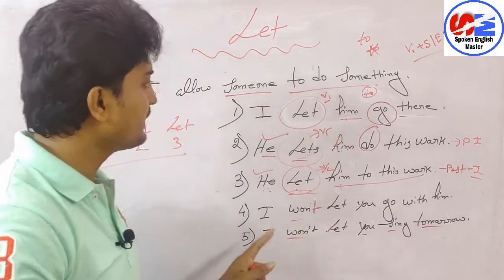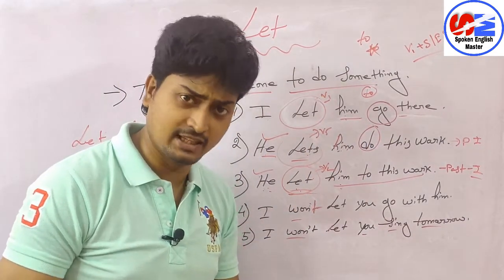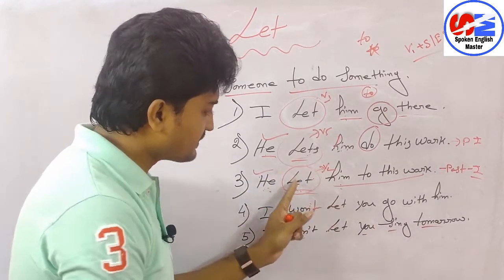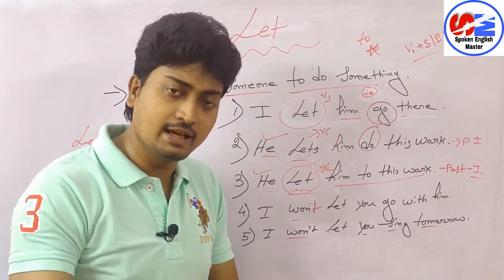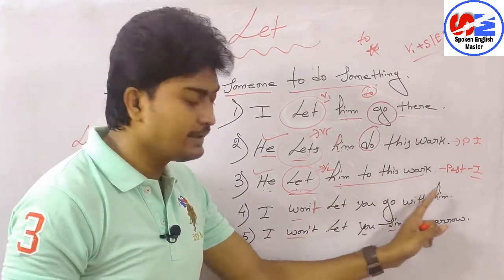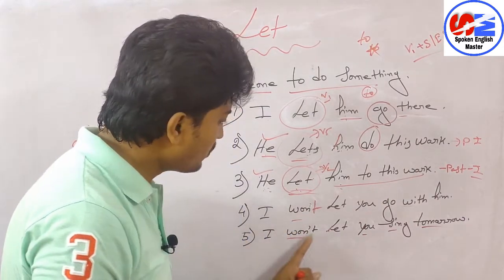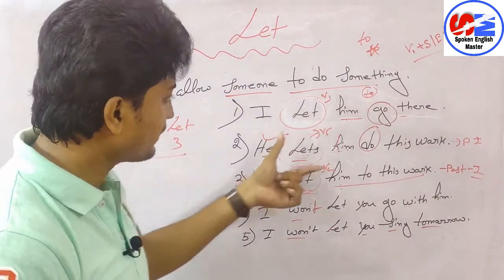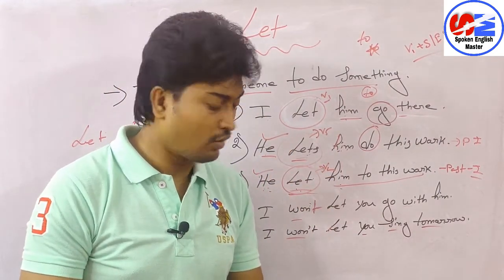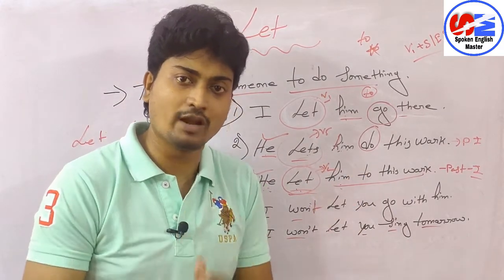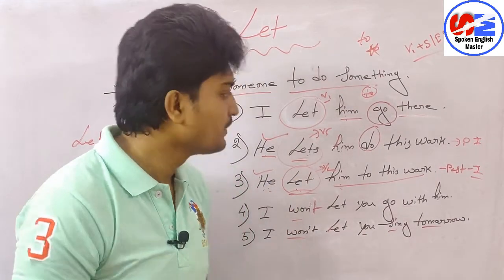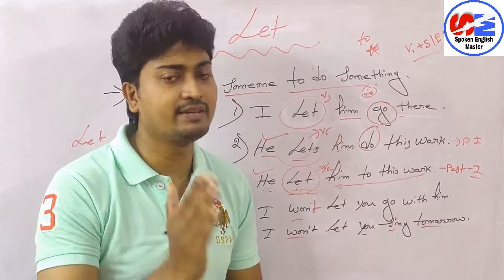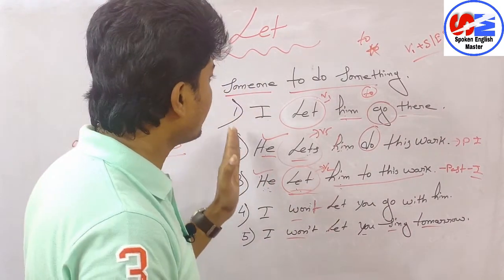Again, let me review: 'I let him go there' — [Hindi: Main use wahaan jaane deta hoon.] 'He lets him do this work' — [Hindi: Vo use ye kaam karne deta hai.] 'He let him do this work' (past tense) — [Hindi: Vo use ye kaam karne diya.] 'I won't let you go with him' and 'I won't let you sing tomorrow.' I hope you are understanding. I've taken only a few examples — when you are at home, try to create many more examples, and if you face problems, the comment section is there.